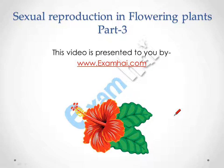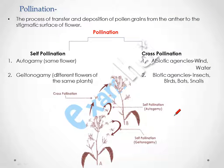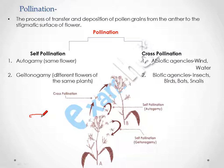Hello everyone. Today we are going to discuss the topic sexual reproduction in flowering plants. This video is presented to you by www.examha.com. Pollination is a process in which the transfer of pollen grain takes place from the anther to the stigmatic surface of a flower.